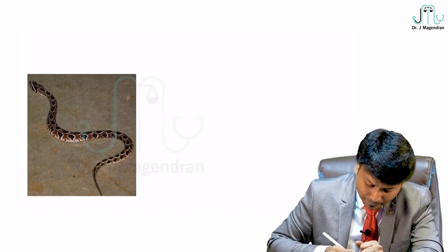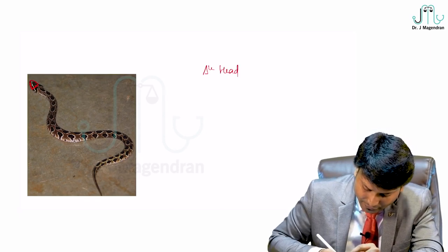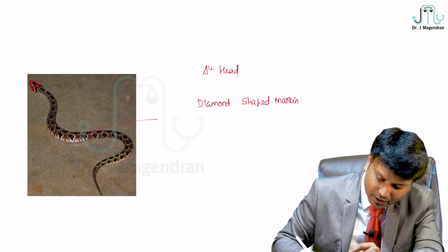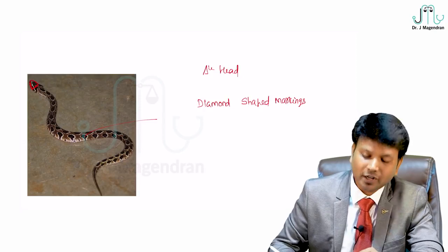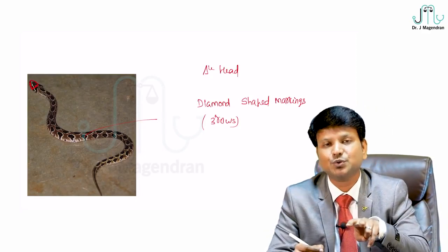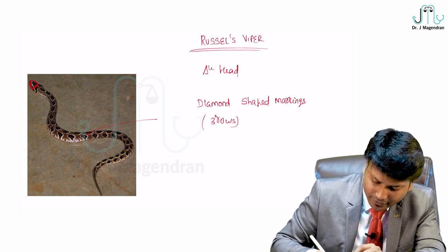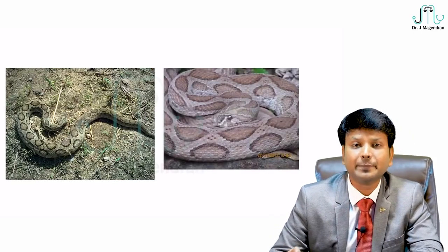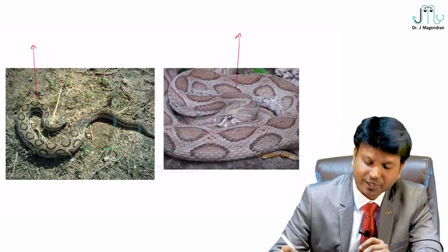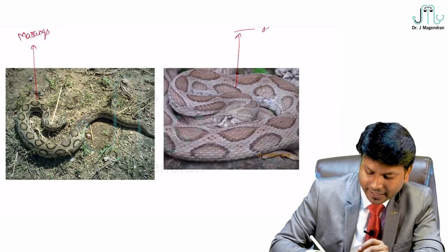Russell's Viper can be identified by: a triangular head and three rows of diamond-shaped markings on the dorsum (one row on top, two on the sides). These two features are enough to identify Russell's Viper. A similar question was asked in a recent exam.